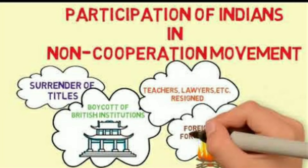Non-Cooperation Movement. The Non-Cooperation Movement was led by Mahatma Gandhi in 1920. People were asked not to cooperate with the British government. Students and teachers left schools or colleges run by the British. Lawyers boycotted the courts, and many people quit their government jobs. Some people surrendered titles and posts given to them by the British. People decided to buy only Swadeshi goods and clothes. It was a peaceful, nationwide movement.